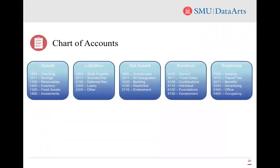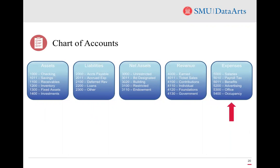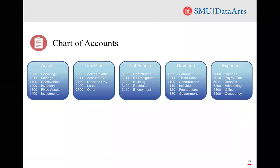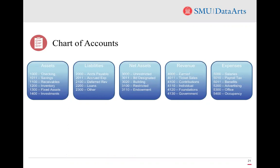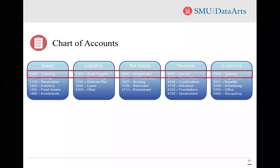There are five main account types on a chart of accounts: assets, which is everything your organization owns; liabilities, which is everything your organization owes; net assets, also called equity in for-profit terms; revenue; and expenses. All of the lines on your chart of accounts fall into one of these main account types. The account number associated with each line might be a simple string of a few digits or a longer multi-segmented number. Often, asset categories start with one, liabilities with two, net assets with three, revenue with four, and expenses with five through nine.